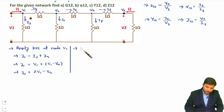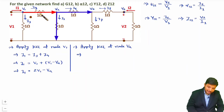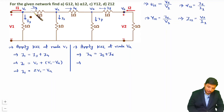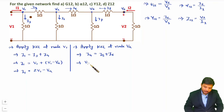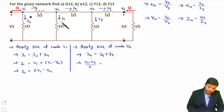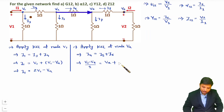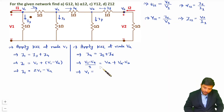Now let us apply KCL at node VA. Entering current I4 equals leaving currents I5 plus I6. I4 is V1 minus VA, I5 is VA, and I6 is VA minus VB. Rearranging, with VA terms combining to give 3VA, we get: V1 equals 3VA minus VB. This is equation 2.